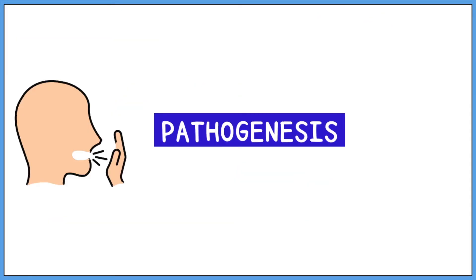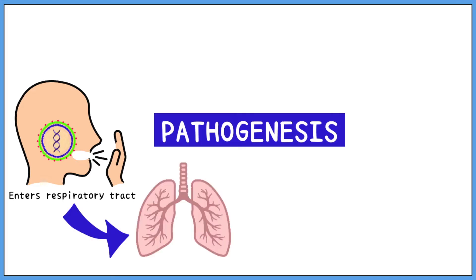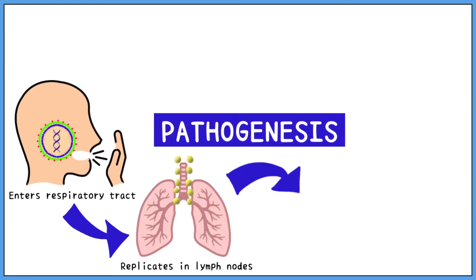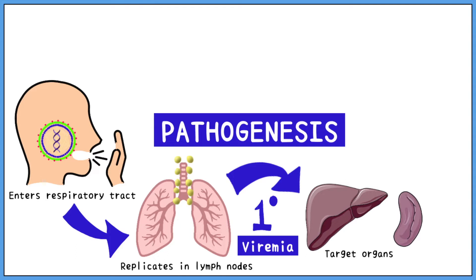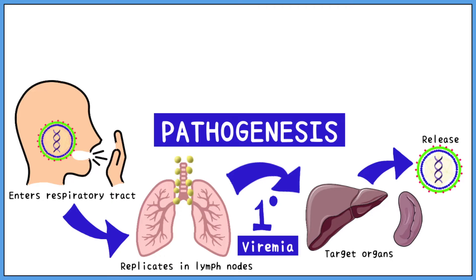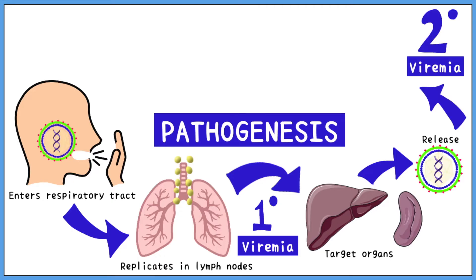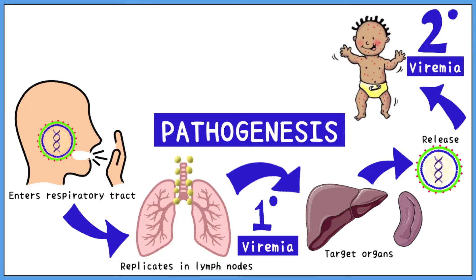Let us try understanding the pathogenesis of VZV infection. Infection spreads through the respiratory route. The virus enters the respiratory tract, from where it travels to the local lymph nodes. Once it enters the lymph nodes, it rapidly replicates and spreads to the liver and spleen, which are its target organs. This is called primary viremia. The virus is then released into the body to cause secondary viremia, characterized by skin rash commonly called chickenpox.